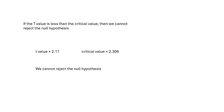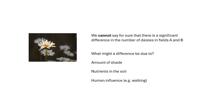So if the T-value is less than the critical value, we cannot reject the null hypothesis. My T-value is 2.11 and my critical value is 2.306, so we cannot reject the null hypothesis. The T-value is actually pretty close to the critical value, so it may be the case that the difference is significant, but we cannot definitely say that it is. We cannot say for sure that there is a significant difference in the number of daisies in fields A and B. If there was a difference, it might be due to the amount of shade, nutrients in the soil, or human influence such as people walking over a footpath.